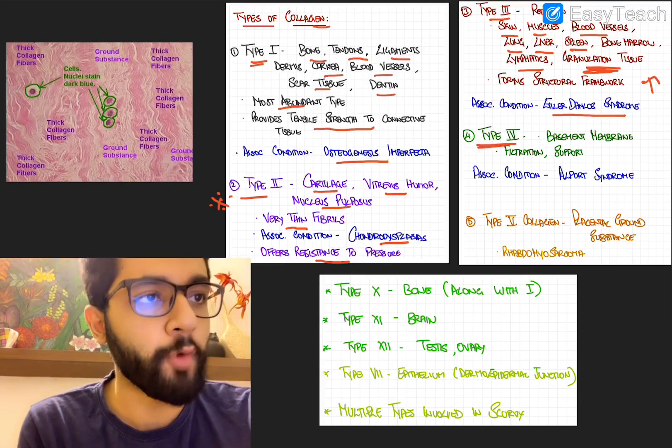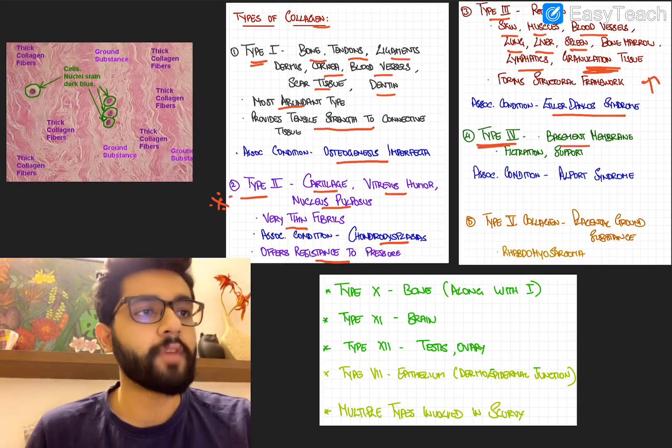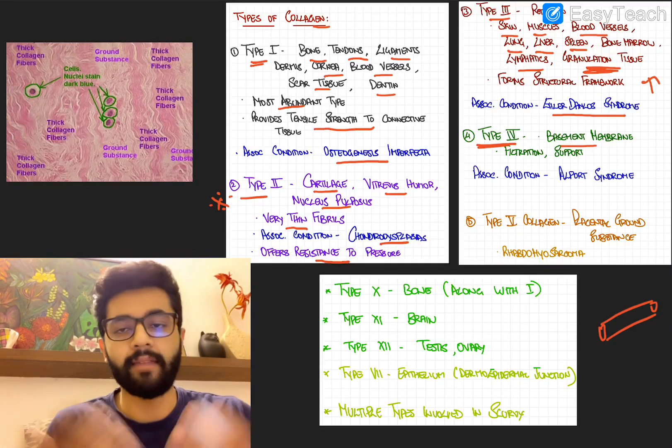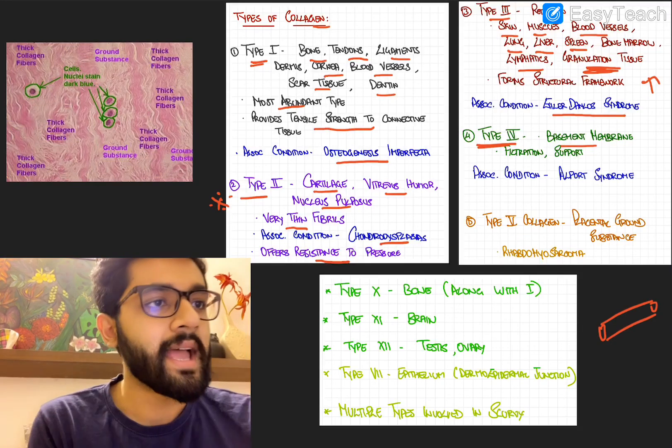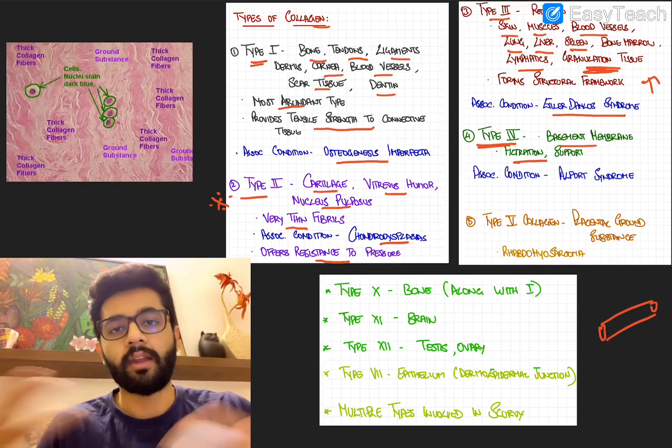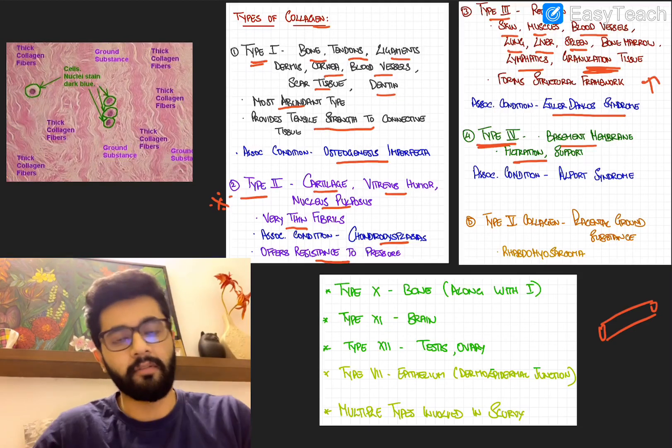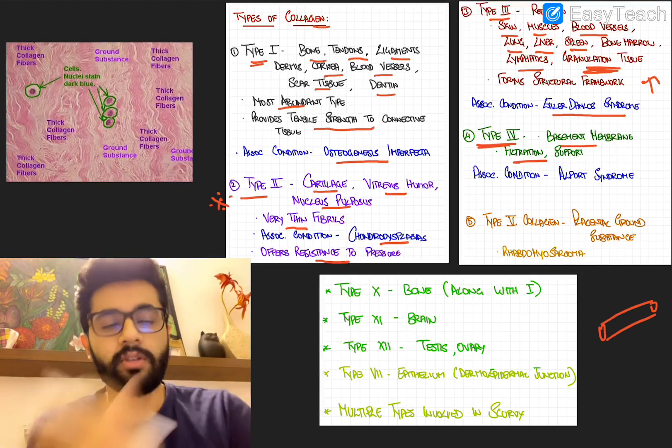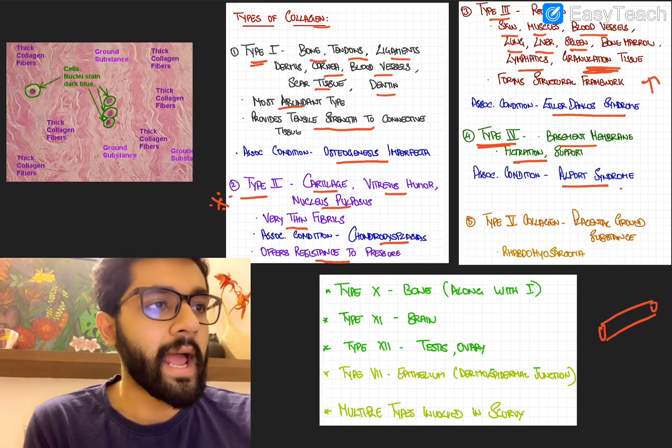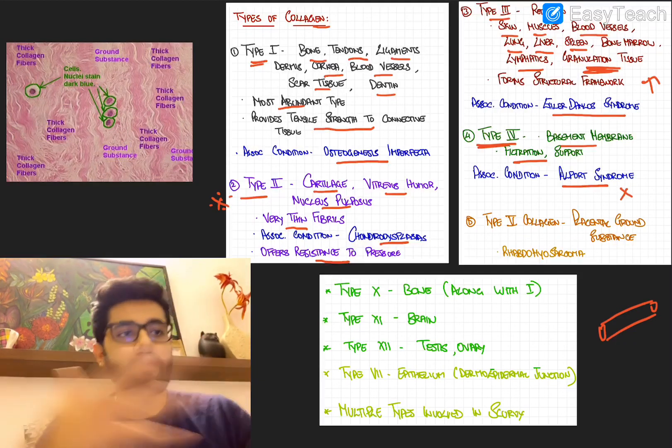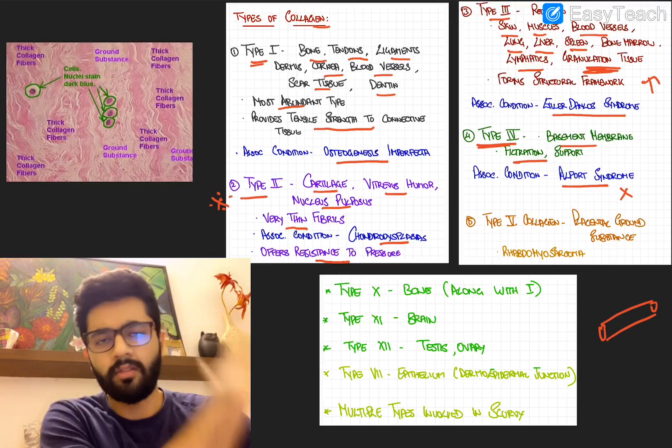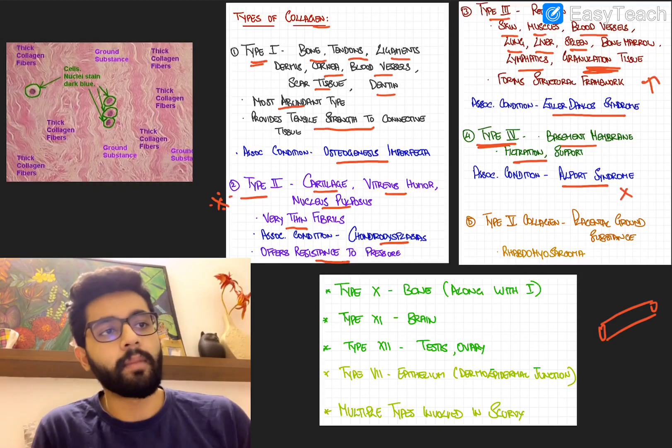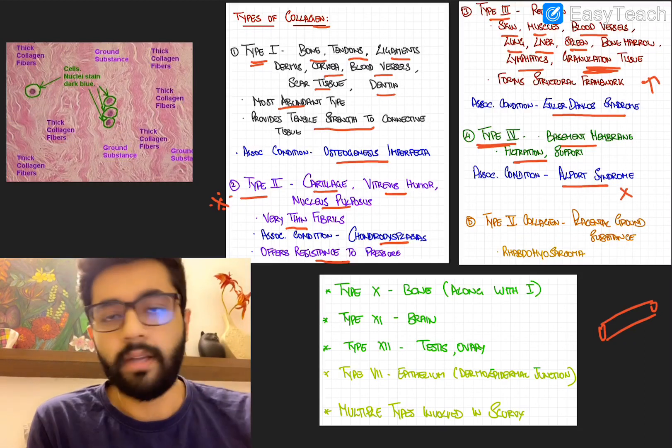Next, we go to type 4. So type 4 collagen is found in the basement membrane of vessels. Type 4 collagen is mainly found in the basement membrane of vessels and it provides filtration and support tissue. So basement membrane filters, so filtration and support, but mainly you can remember filtration is important. And it's associated with a condition called Alport syndrome. So defective basement membrane is where you see Alport syndrome with a lot of manifestations. Even the renal basement membrane and the basement membrane of the vessels have type 4 collagen.